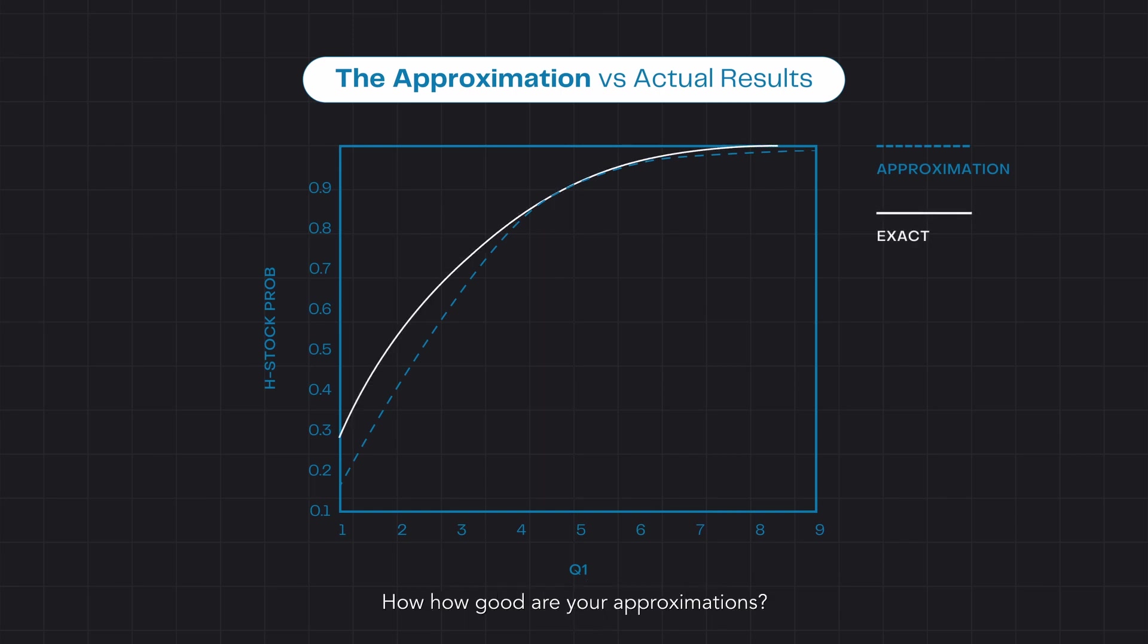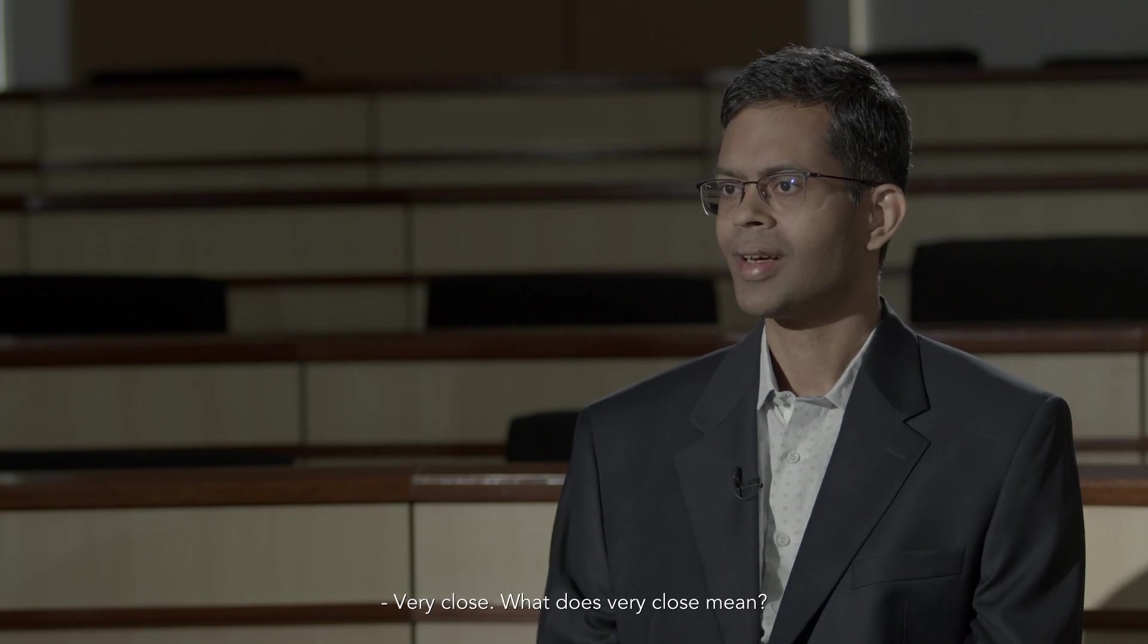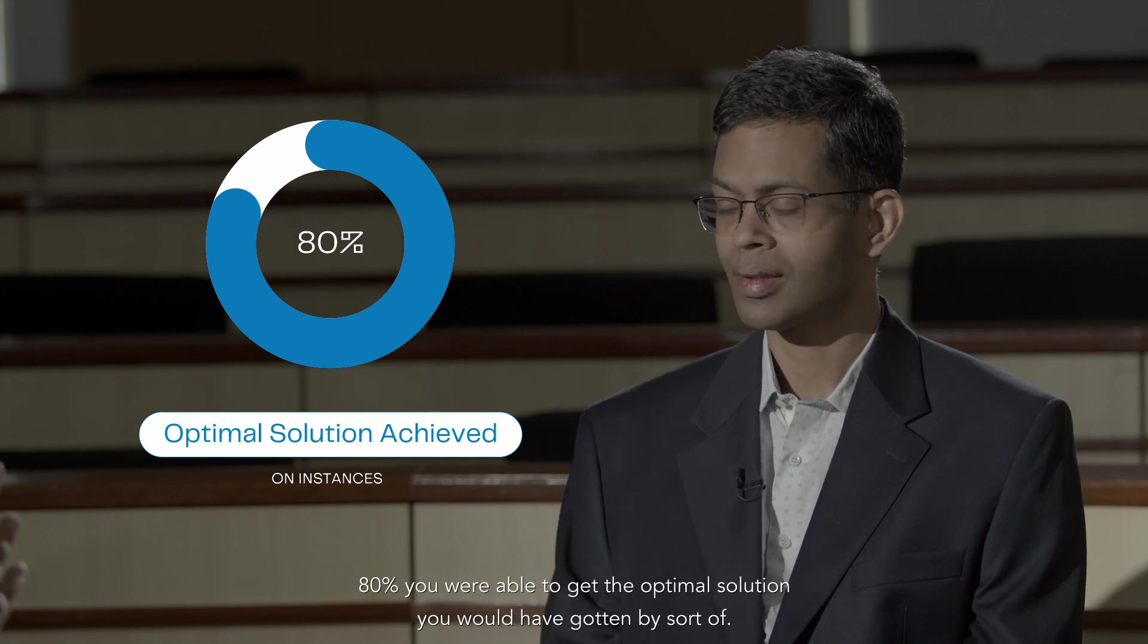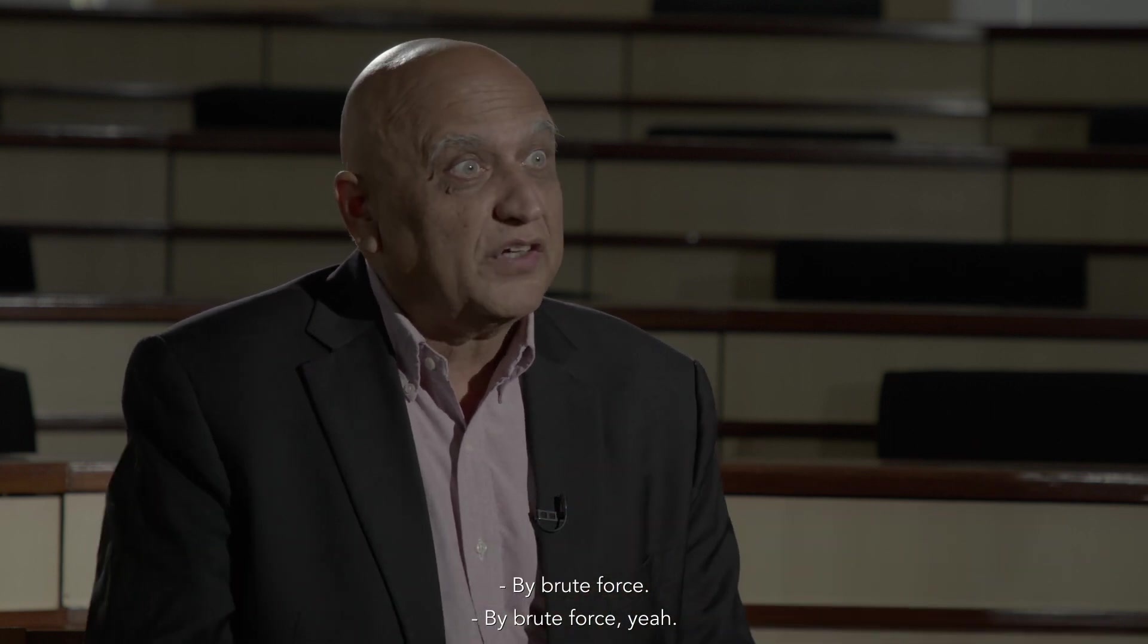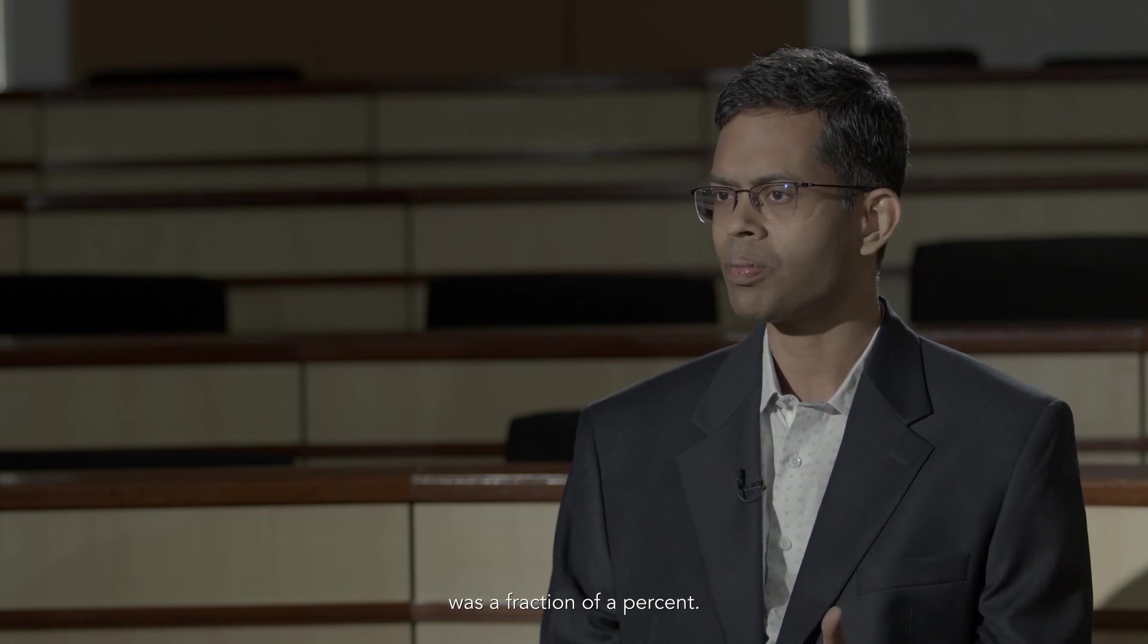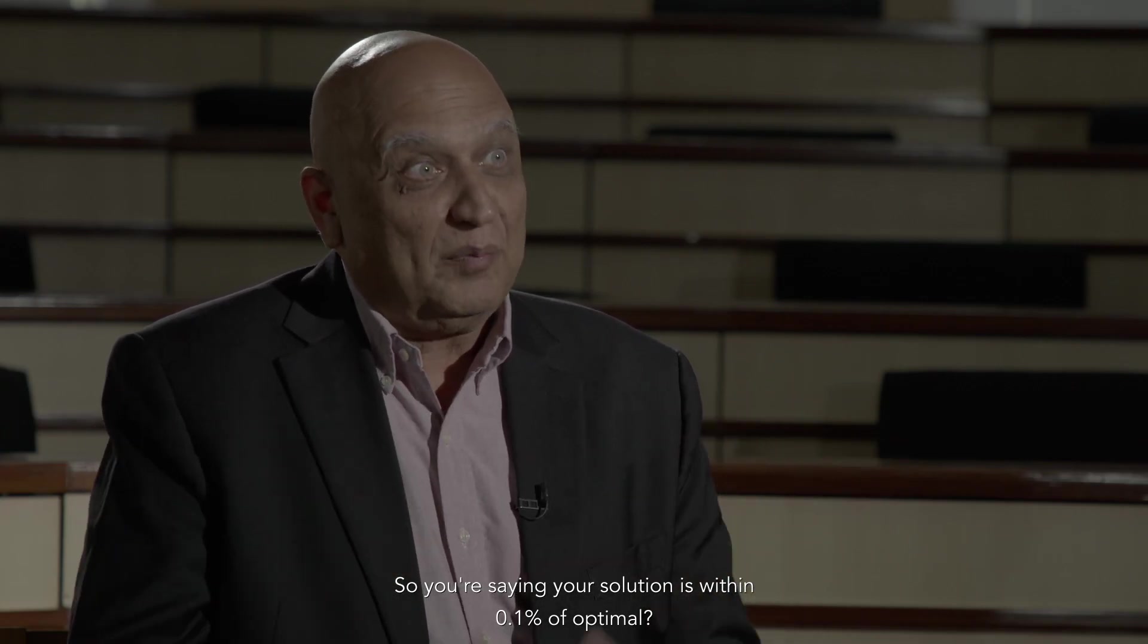And what do you find? How good are your approximations? So we were very pleasantly surprised because ours is an approximation method, but on the test problems that we ran, they were very close to optimal. Very close. What does very close mean? So in 80% of instances, we got the optimal solution. We were able to recover. 80% you were able to get the optimal solution you would have gotten by brute force. And for the remaining problems, the optimality gap was a fraction of a percent. So 0.1%, for instance. So you're saying your solution is within 0.1% of optimal. That's pretty impressive.